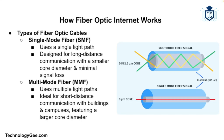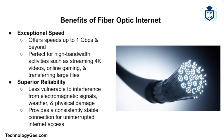There are two types of fiber optic cables. The first is single-mode fiber, which uses a single light path, is designed for long-distance communication, has a smaller core diameter, and can transmit data over longer distances with minimal signal loss. The second is multi-mode fiber, which uses multiple light paths, is suitable for short-distance communication, has a larger core diameter, and is commonly used for data transmission within buildings and campuses.